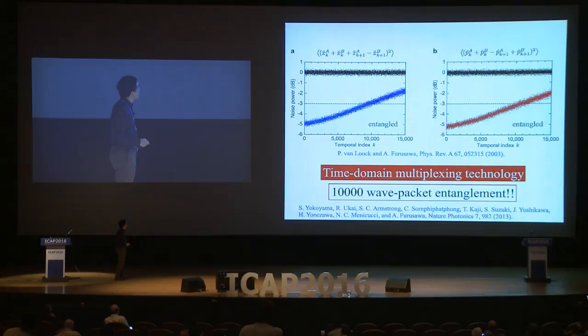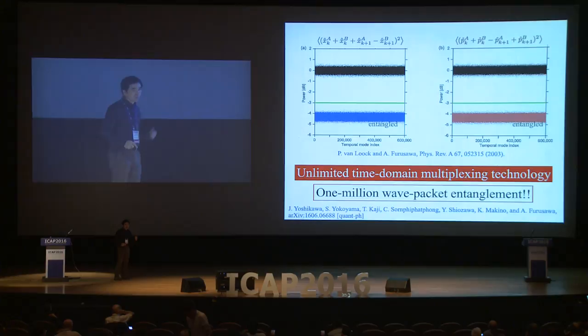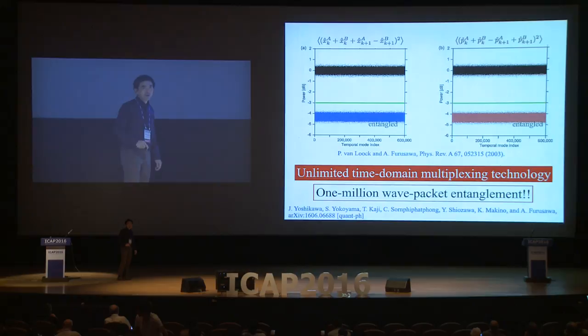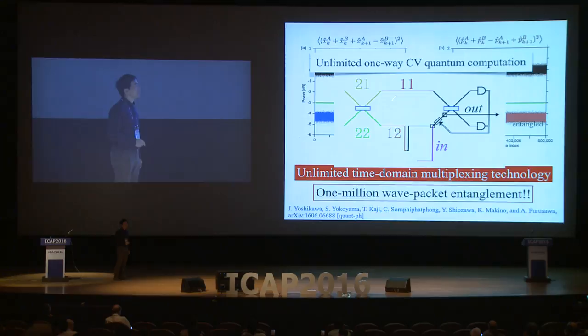Three years ago the correlation was around this level, and entanglement was only 10,000 wave packets. But now we modified the experimental methodology and got one million. But this is not a limit — just a limit of our memory. So now we can make an unlimited scale of continuous variable cluster state, meaning we can make these operations forever.